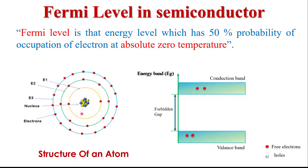The electrons in the lower energy level need some additional energy to jump into the higher energy level. If we give external energy from an external energy source, these lower-energy electrons absorb the energy and jump into the higher energy level. In this way, holes are generated in the lower energy level and the density of electrons increases in the higher energy level.